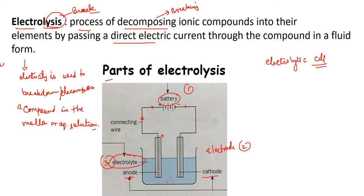These electrons are supplied to the cathode, which is why the cathode is negatively charged — it is attached to the negative terminal of the battery. The anode is positive because it is attached to the positive terminal of the battery. The battery acts as an electron pump, drawing electrons away from the anode.